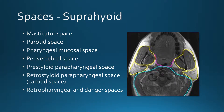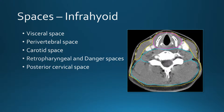In the suprahyoid neck we have the masticator space, parotid space, pharyngeal mucosal space, and perivertebral space. In between those we have the parapharyngeal space, which has both a pre-styloid and a retrostyloid component, and the retropharyngeal and danger spaces. In the infrahyoid neck we have the visceral space, perivertebral space, carotid space, retropharyngeal and danger spaces, and the posterior cervical space.